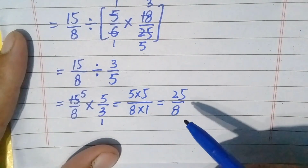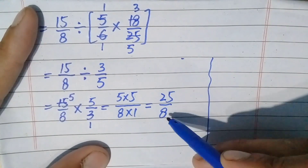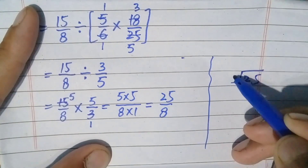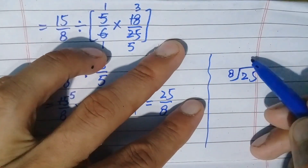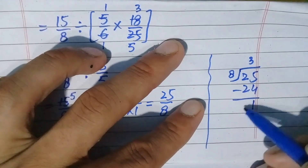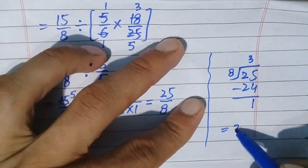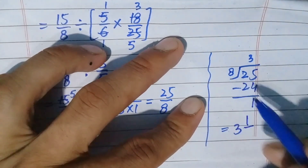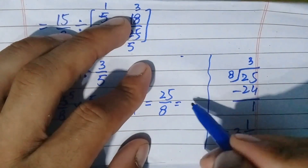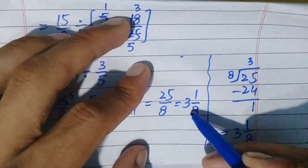To change the improper fraction 25/8 to a mixed fraction, we divide the numerator by the denominator. In the rough work: 8 times 3 is 24, remainder is 1. So the mixed fraction is 3 whole 1/8. Therefore, 25/8 equals 3 and 1/8. Remember, we can also convert this mixed fraction back to an improper fraction: 8 times 3 is 24, 24 plus 1 is 25, so we get 25/8.